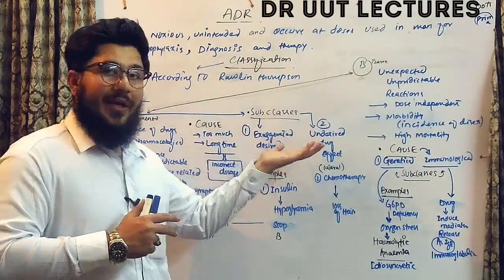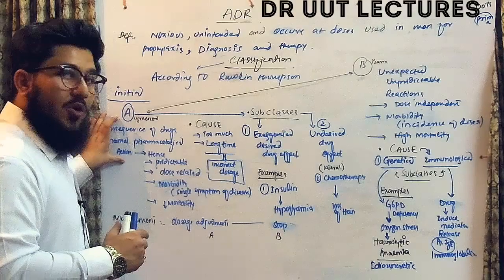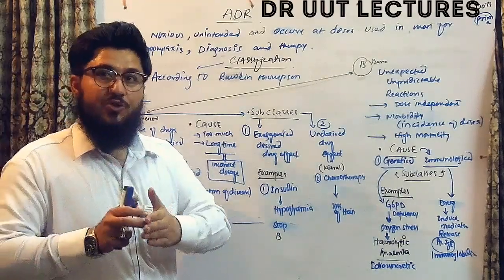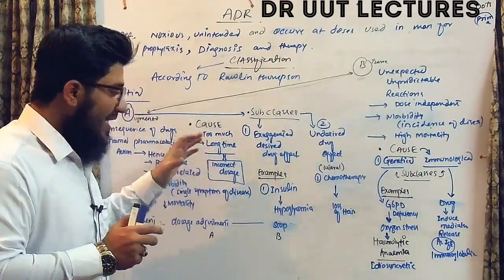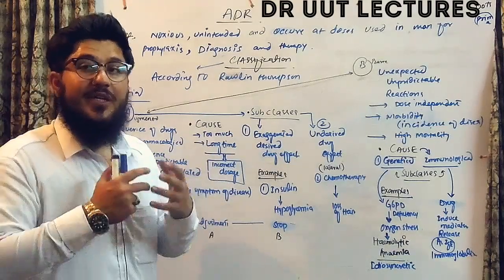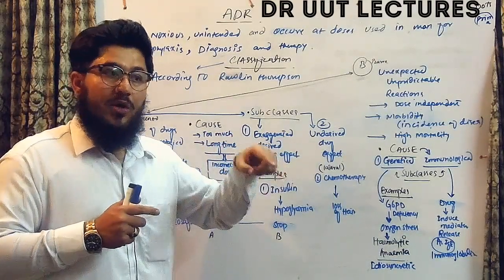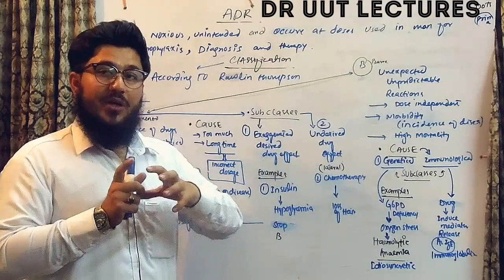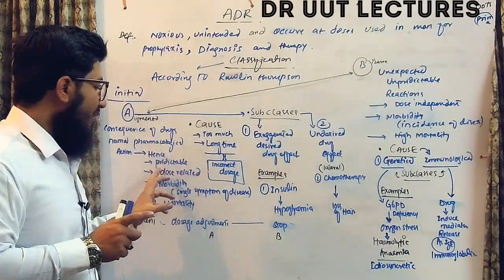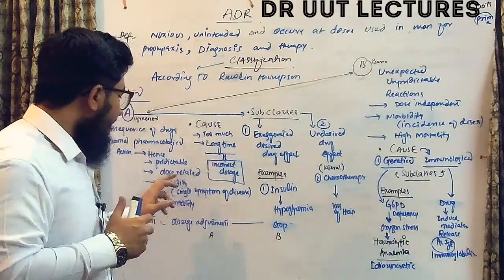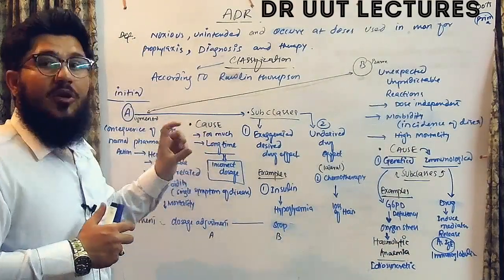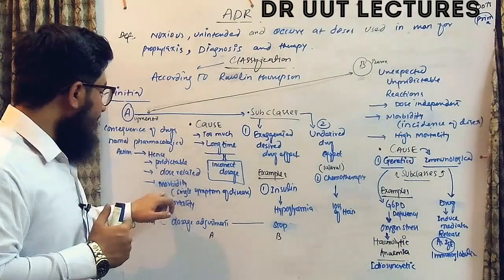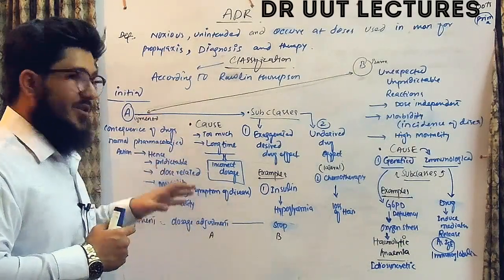Since these reactions are due to the drug's pharmacological action, we know that a particular drug is going to cause a particular action — so type A reactions are actually predictable. They can easily be predicted and they are dose-related. The main cause is incorrect dosage — using either too much or for a longer period of time. The morbidity and mortality regarding type A reactions are very low.